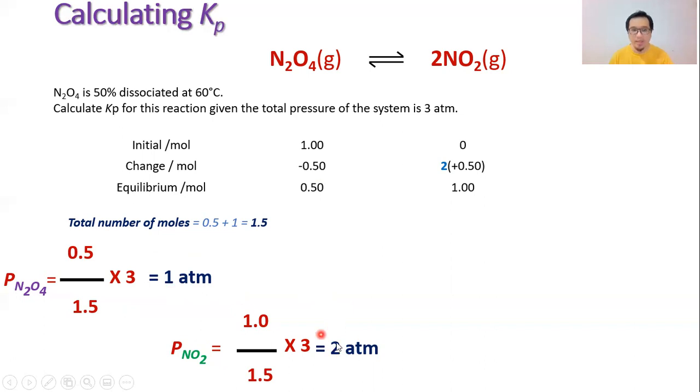Once we have gotten these partial pressures, we can move on and put our information into our Kp expression. By the way, this is a Kp expression. You always write your Kp expression whereby the product partial pressure is on top divided by the partial pressure of the reactant. Always remember you need to power to the number of moles you see on the stoichiometry equation. There are two moles of NO2, so we power the partial pressure of NO2 by 2.